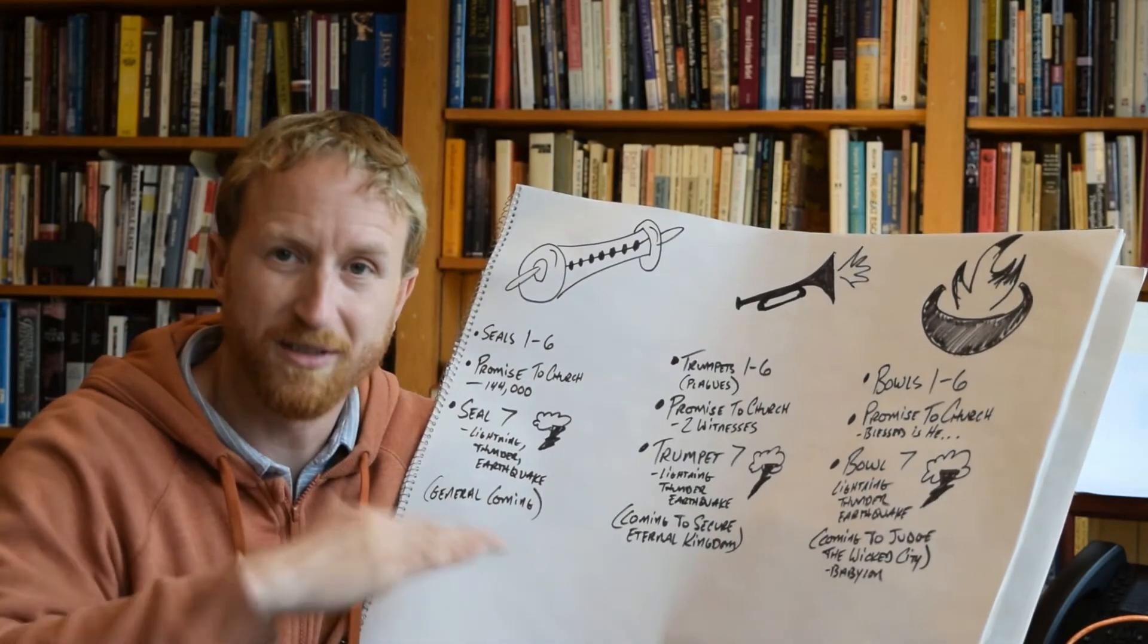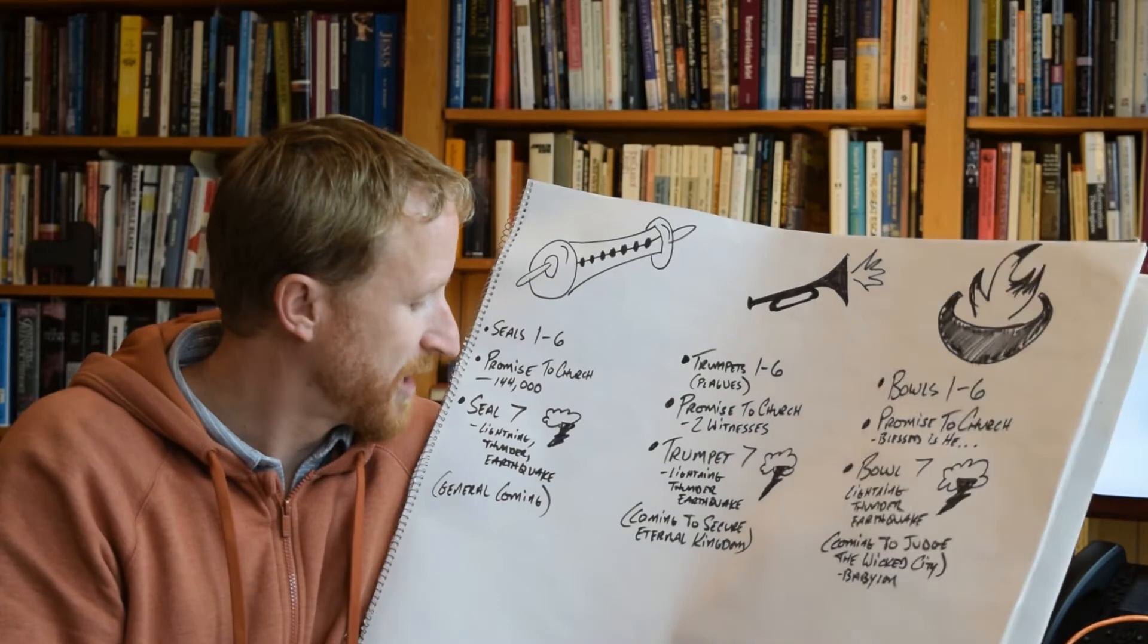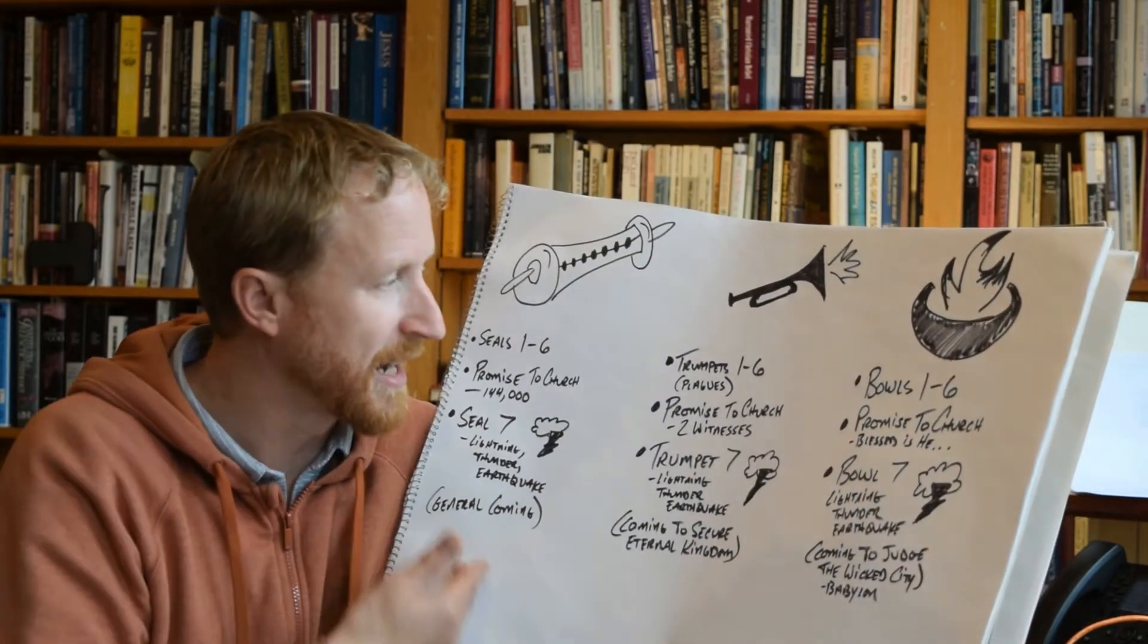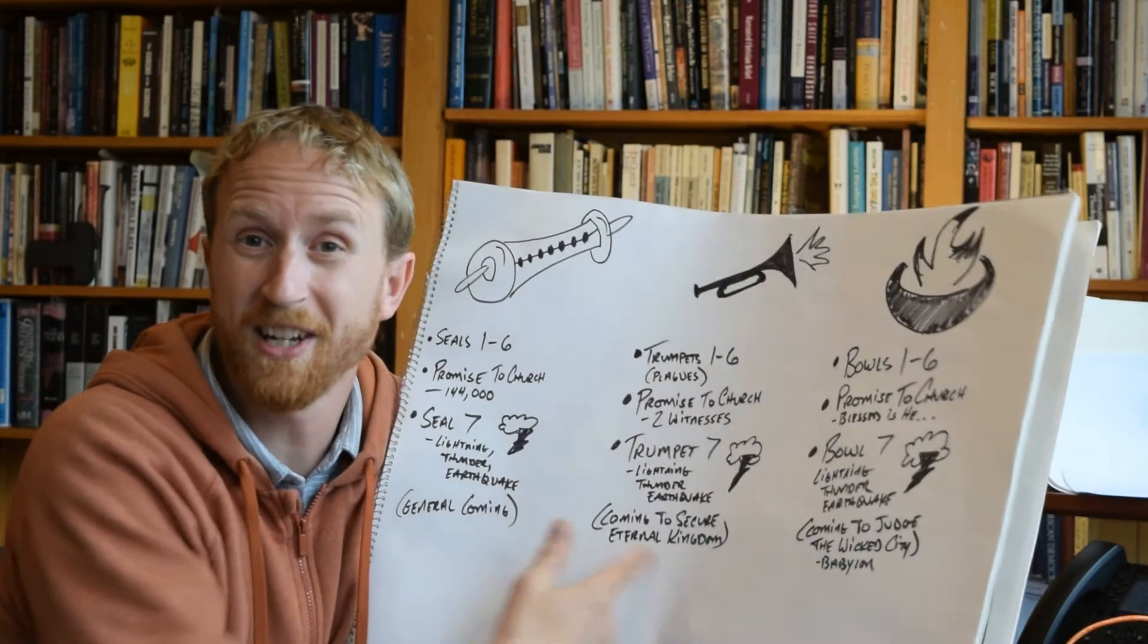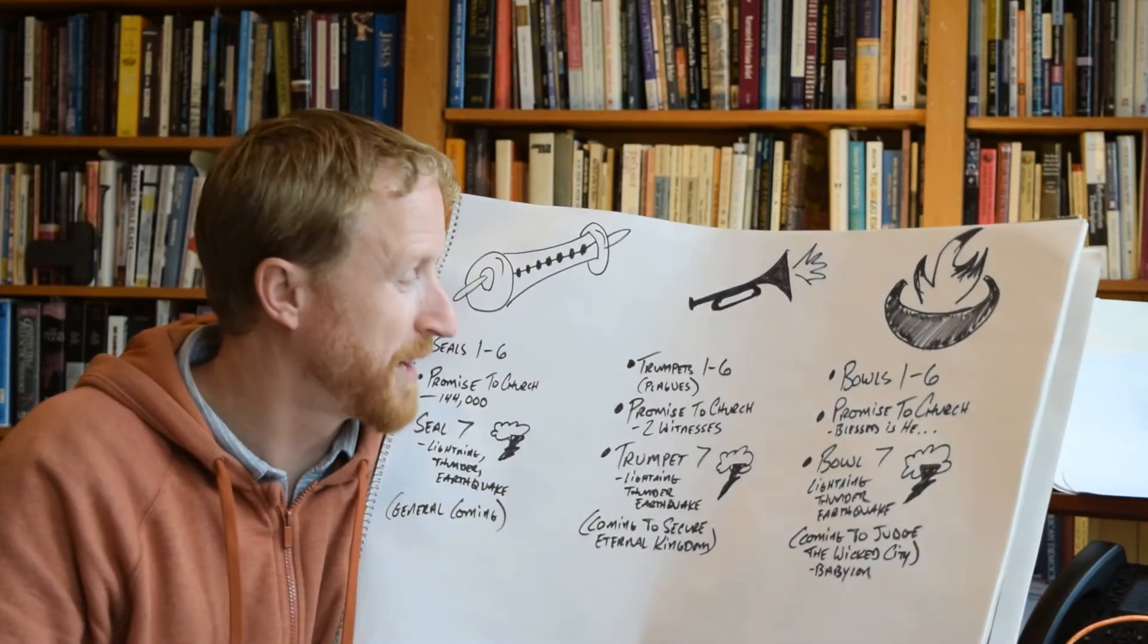And then seal seven comes along, summing up the deal, flashes of lightning, peals of thunder, and an earthquake, the end. Except it leads right into, now, the second cycle, which gives us another look at that span of history.